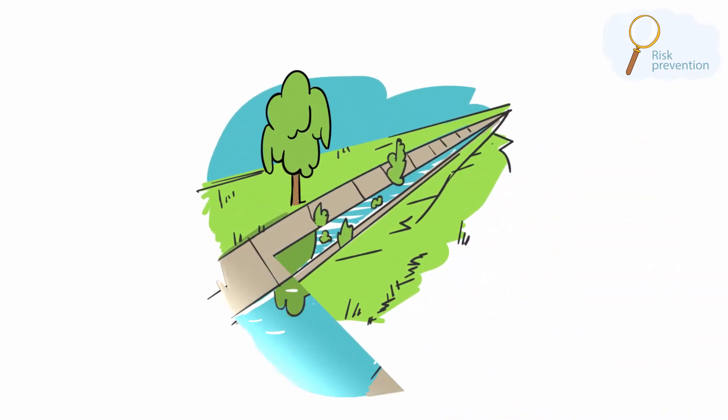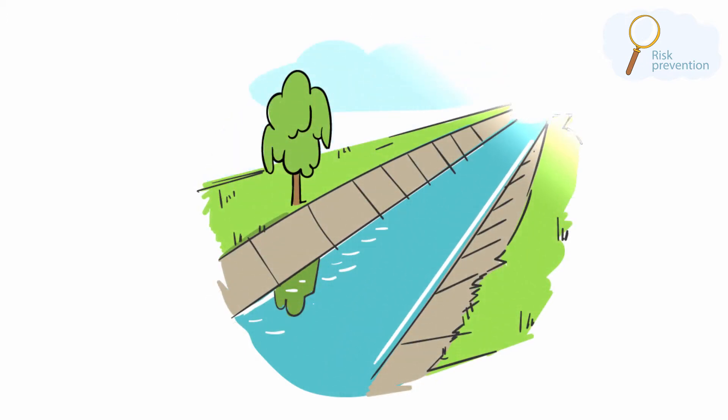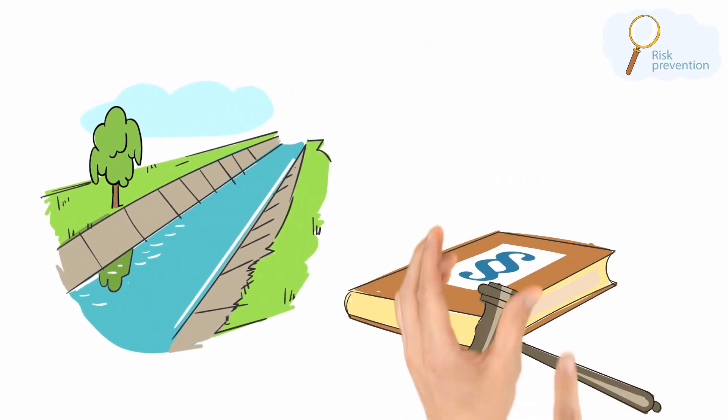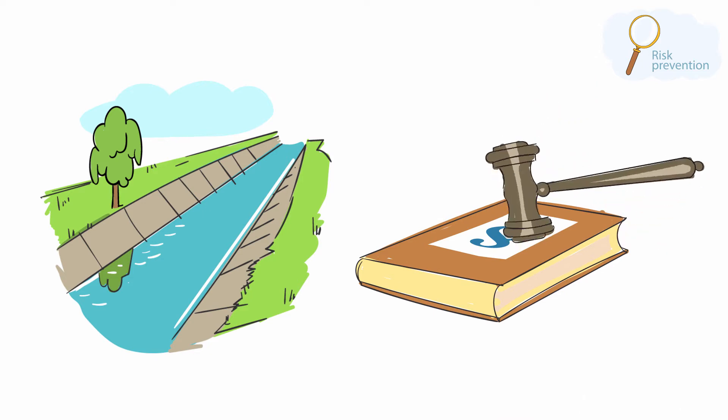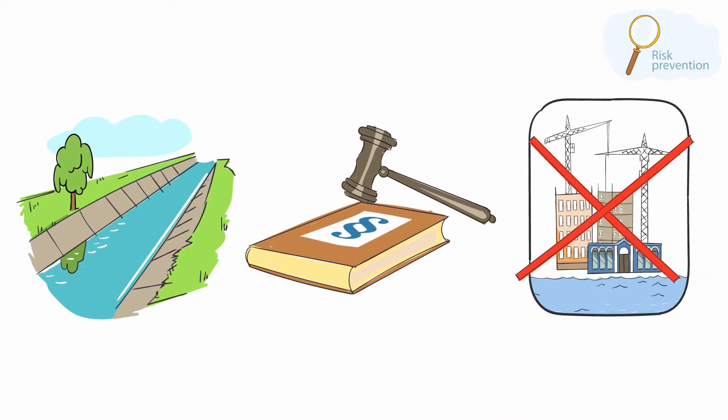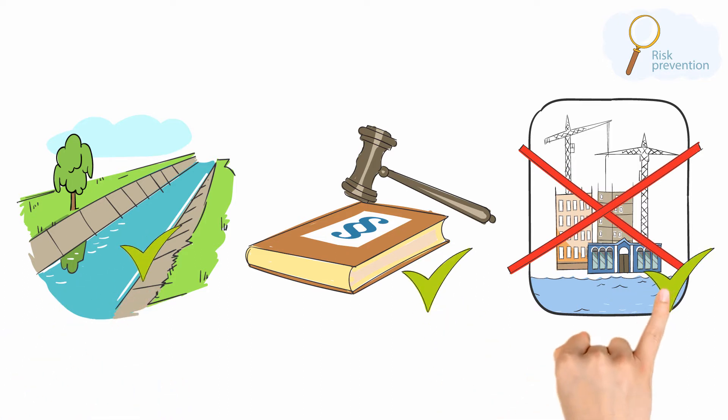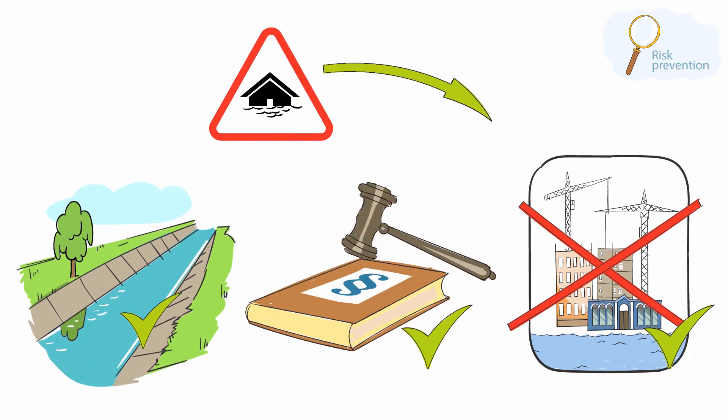Before the rainy season, the mayor can invest in widening and cleaning drains. Furthermore, she can make and enforce local laws to ensure that people do not build in flood-prone areas. These are all examples of actions that can be taken to prepare a city to reduce its risk of flooding.